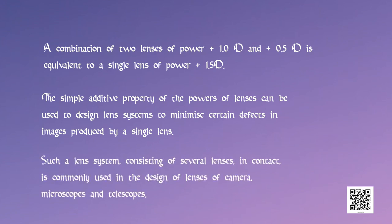For example, a combination of two lenses of power 1 diopter and 0.5 diopters is equivalent to a single lens of power 1.5 diopters. The simple additive property of the power of lenses can be used to design lens systems to minimize certain defects in images produced by a single lens. Such a lens system consisting of several lenses in contact is commonly used in the design of lenses of cameras, microscopes and telescopes.